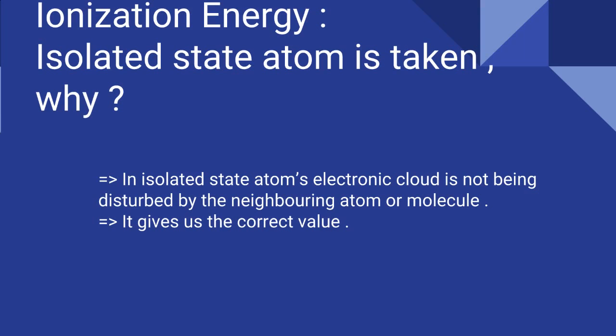The question arises: why is ionization energy measured by taking the atom in the isolated state? The reason is, whenever the atom is in the isolated state, its electronic cloud is not being disturbed by the neighboring atoms or molecules. In this way, we can measure the force of attraction between the nucleus and the outermost electron in the form of ionization energy, giving us the correct value.